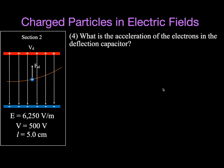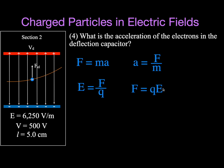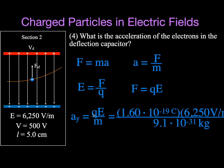Next, we want the acceleration in the y direction using Newton's second law: acceleration equals force divided by mass. The force comes from the definition of the electric field: F equals q times E. So the acceleration in the y direction is q times E divided by the mass. The charge is 1.6 times 10 to the minus 19 coulombs, the electric field strength is 6,250 volts per meter, and the mass is 9.1 times 10 to the minus 31 kilograms. The acceleration in the y direction is 1.1 times 10 to the 15 meters per second squared.